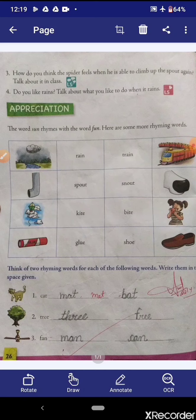The next one is the third question: How do you think the spider feels when he is able to climb up the spout again? Talk about it in class. Students, now take out your Mulberry notebook, write classwork, and start doing question and answer.